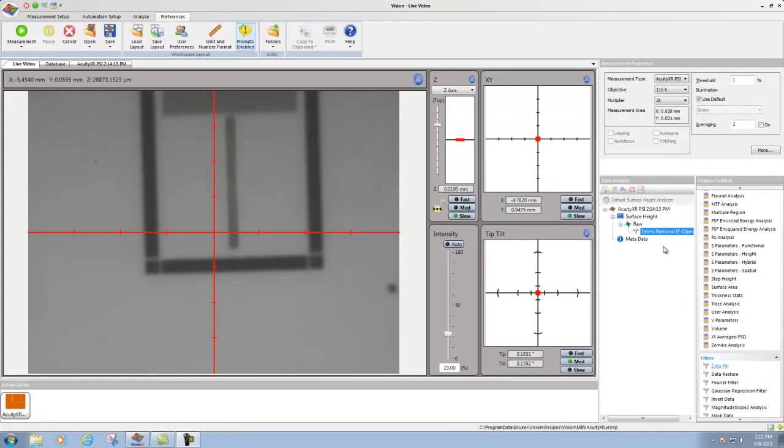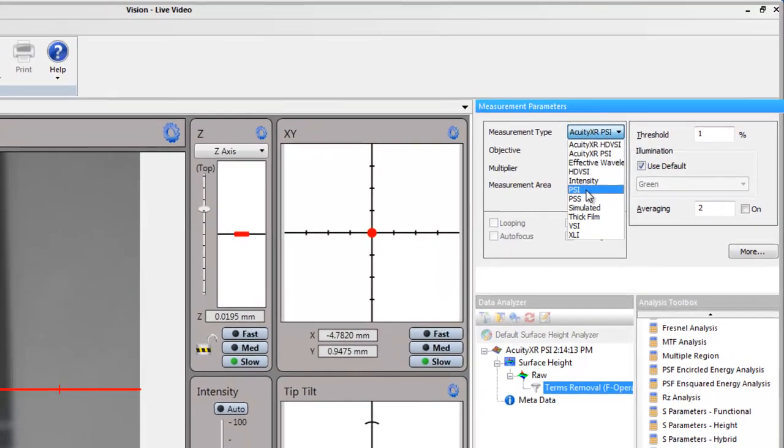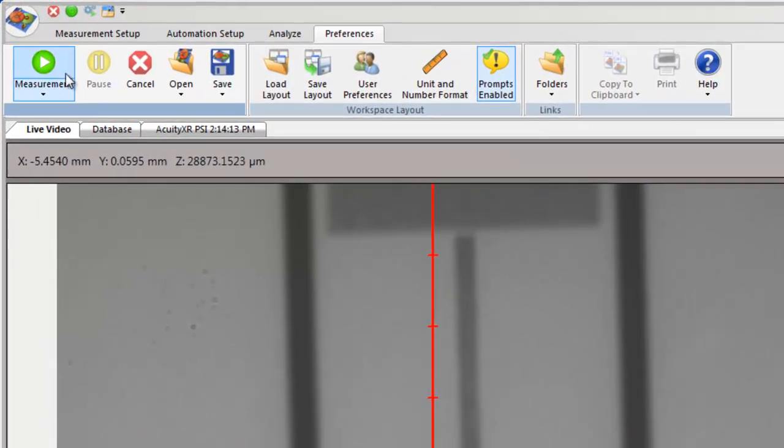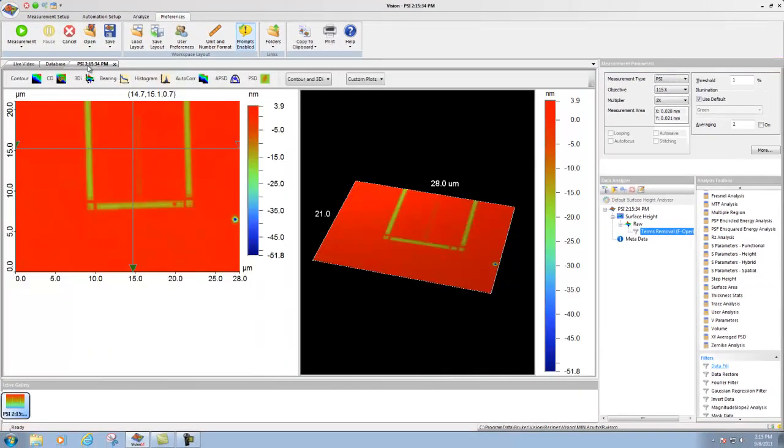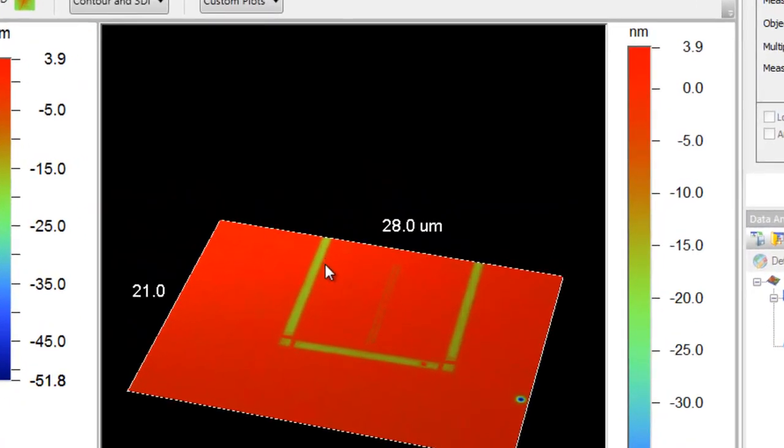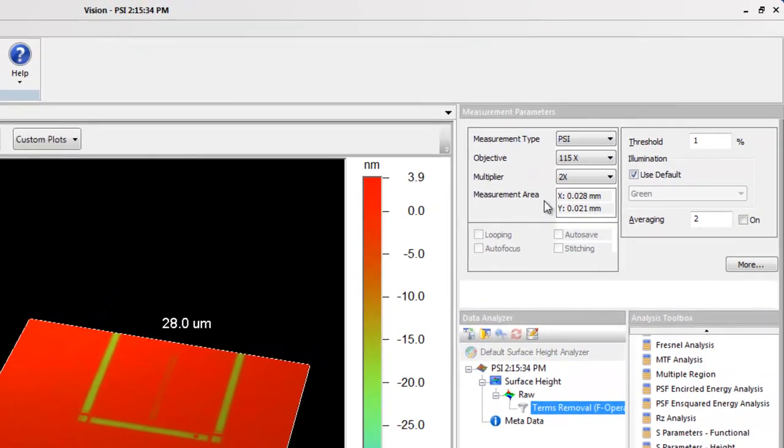The first thing we'll see is a PSI measurement of a 150 nanometer pitch sample. It's easy to choose the measurement method and then make the measurement. You click on the data tab and you'll get a nice view, but unfortunately we don't see much because this is not an easy target to resolve for traditional 3D optical microscope.